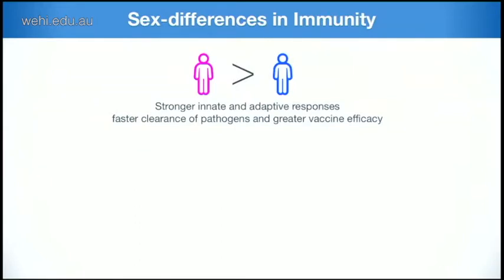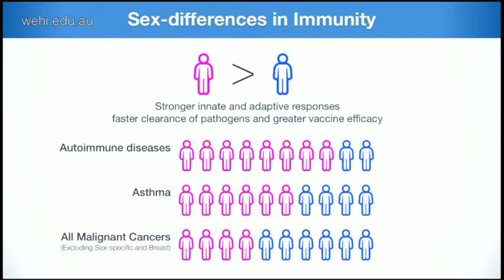This hypothesis started from the observation that males and females have very distinct immune responses — observed not only in humans but across many different species, from Drosophila to mouse. Generally, females have a greater and better immune response, leading to faster clearance of pathogens and better vaccine responses. When you look at common diseases, excluding sex-specific cancers, males are much more prone to develop cancer. Conversely, 80% of patients suffering from autoimmune disease are women. A similar, though less extended, observation is seen for asthma, with females being more prone to develop it.